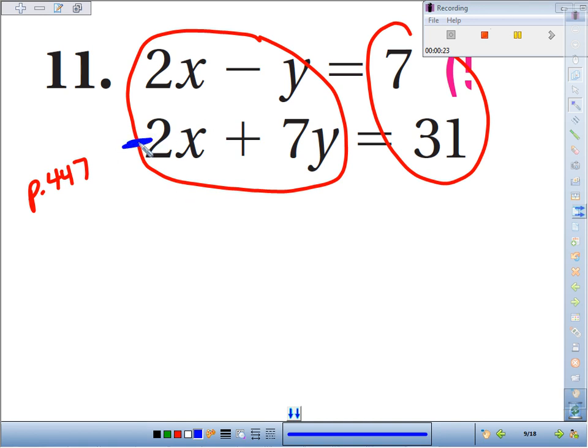or kind of a shortcut, flip it. If you flip all the symbols now, these are going to cancel, and negative y minus 7y is going to give us negative 8y. 7 minus 31, that's going to be negative 24, and if we divide by negative 8 on both sides, we get y equals 3.